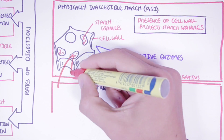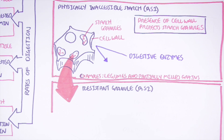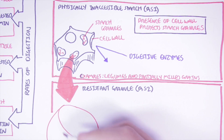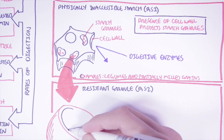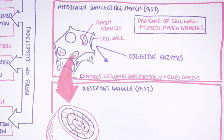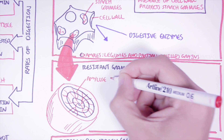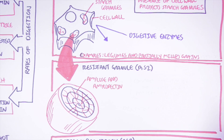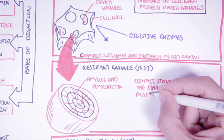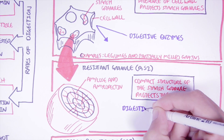Resistant starch type 2, called resistant granules, is resistant to digestion because of the characteristics of the starch granules themselves. Each plant contains starch granules with amylose and amylopectin, and the granules differ in size, shape, and amylose to amylopectin ratio among other things. It is thought that a combination of these factors makes some granules have a more compact structure, making them more resistant to attack by digestive enzymes.